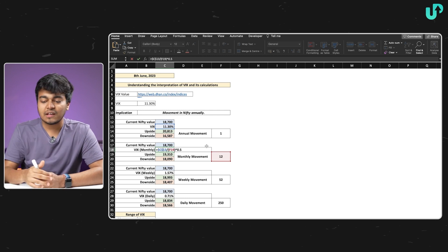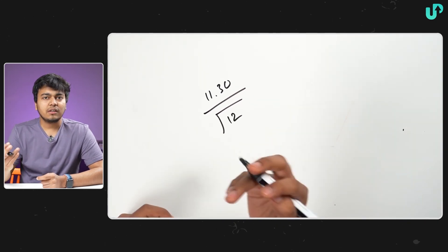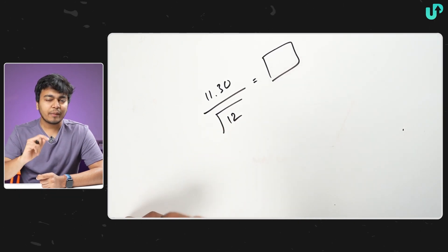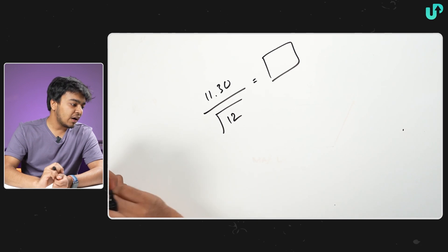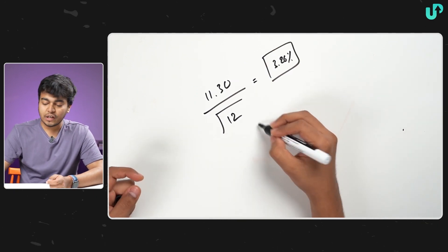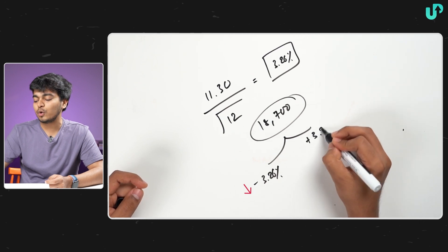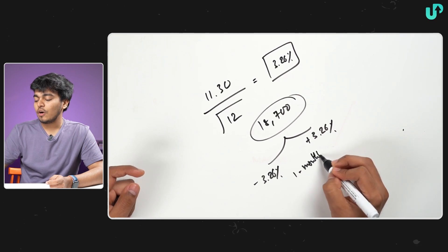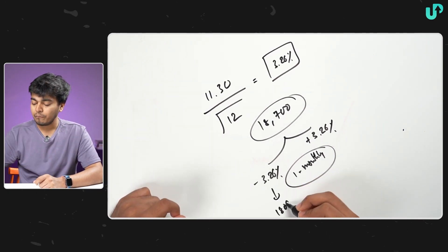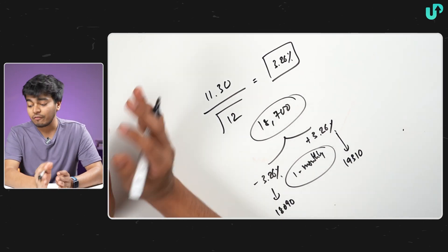The first conversion is monthly. We convert the annual VIX of 11.3% into monthly VIX by dividing it by the square root of 12, because a year has 12 months. The number we get is 3.26%. With the Nifty at around 18,700, the possible movement could be minus 3.26% on the downside or plus 3.26% on the upside on a monthly timeframe — giving a range of approximately 18,090 on the downside and 19,310 on the upside.